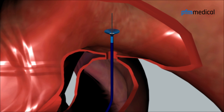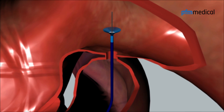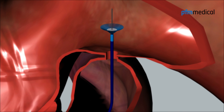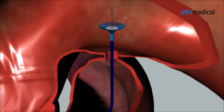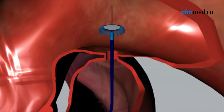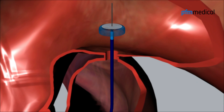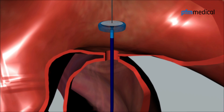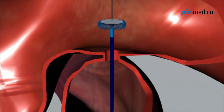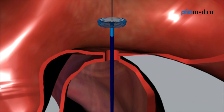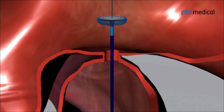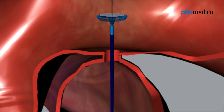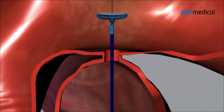The distal disc expands slowly inside the aorta, and the unique configuration of the reverse part of the distal disc can be seen. The stent part is only partly configured at this point.